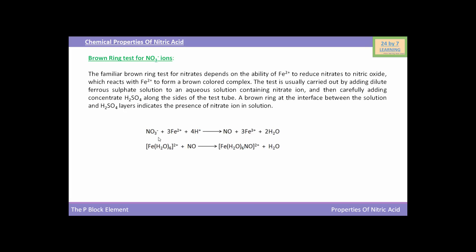The reaction for the brown ring test: NO3- (nitrate ion) reacts with Fe2+ ions and protons to yield NO (nitric oxide), Fe3+ ions, and H2O. Fe2+ ions reduce nitrate to nitric oxide, which further reacts with Fe2+ ions to form a brown-colored complex. This brown-colored complex is formed by the reaction of nitric oxide with Fe2+ ions, and ferrous sulfate solution is the source of Fe2+ ions. This completes the brown ring test for nitrate ions.